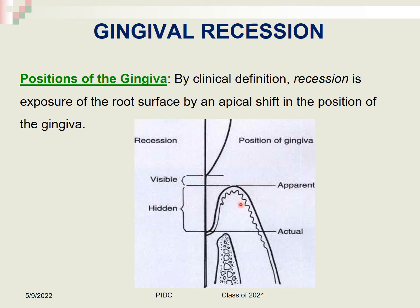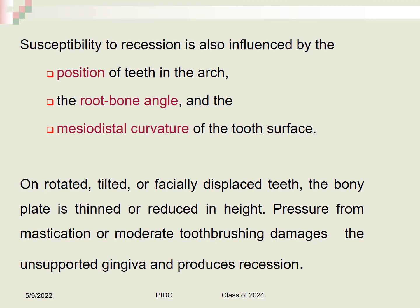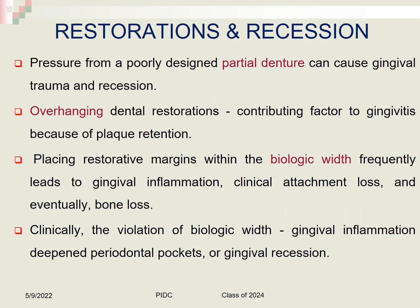Causes of gingival recession include age, faulty tooth brushing, tooth malposition, friction from soft tissues, gingival inflammation, abnormal frenum attachment, trauma from occlusion, and orthodontic movement in the labial direction. Crowding, root-bone angulation, mesiodistal curvature, and rotation or tilting of teeth can thin or reduce the bony plate in height, and pressure from mastication or tooth brushing damages the unsupported gingiva, leading to recession. Violating the biologic width during restoration placement can also cause deepened periodontal pockets or gingival recession.